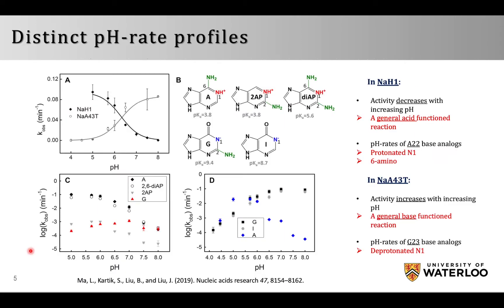At the same time, by studying these DNAzymes, we have gained insight into their catalytic mechanism. By mutating the guanine into adenine, we found distinct pH rate profiles, indicating quite different reaction mechanisms. Therefore, we further mutated the purines into their base analogues and compared their pH rate profiles.